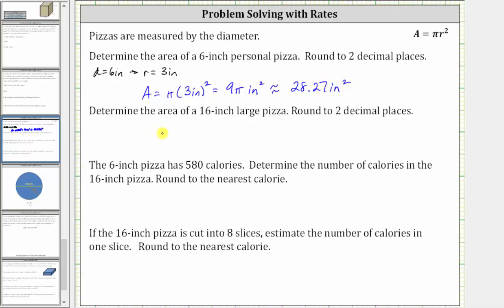Next we're asked to determine the area of a 16 inch large pizza. The diameter d is 16 inches, and therefore the radius r is half of 16 inches, which is eight inches. The area of the large pizza is equal to pi r squared, where r is eight inches, so we have pi times the square of eight. Eight squared is equal to 64, giving an exact area of 64 pi square inches.